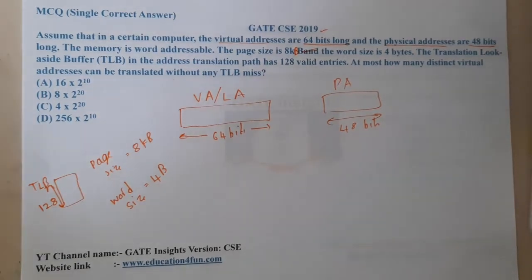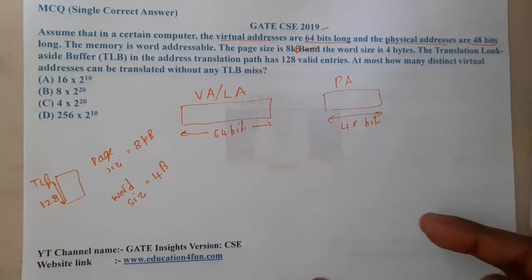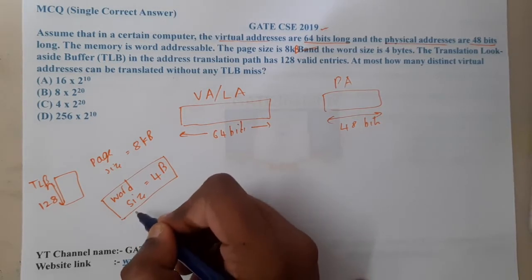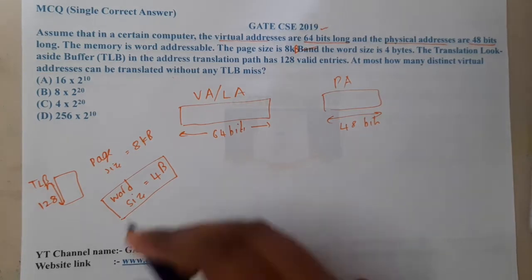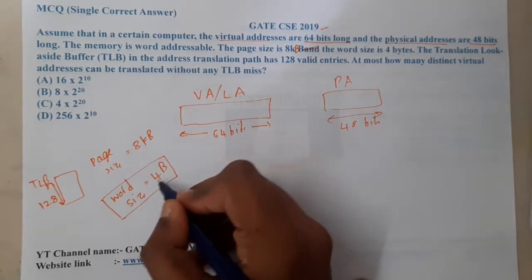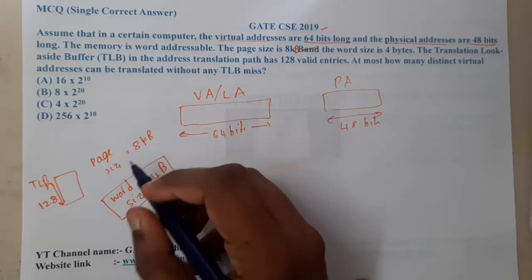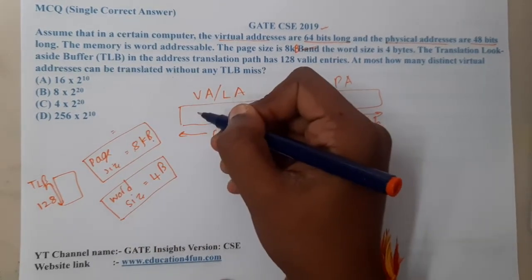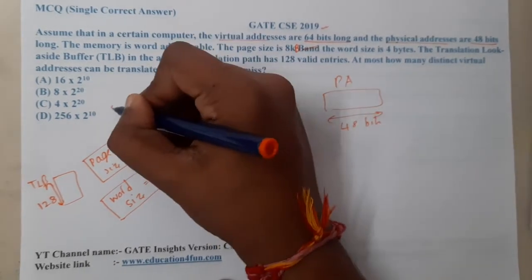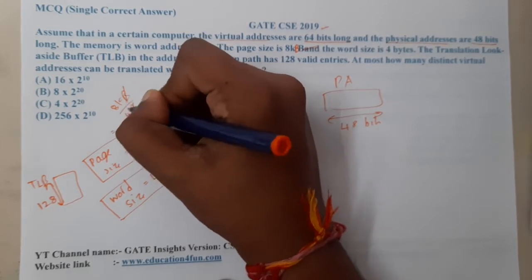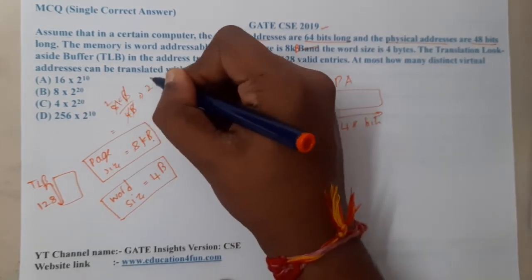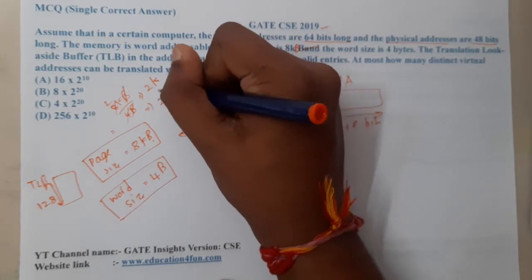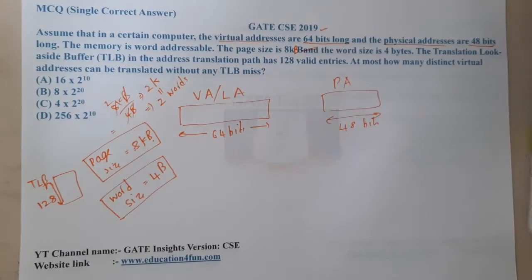Let us analyze the given values one by one. The word size is 4 bytes. If we convert the page size into number of words, it becomes 8 KB divided by 4 bytes, which equals 2K — that is, 2^11 words per page.